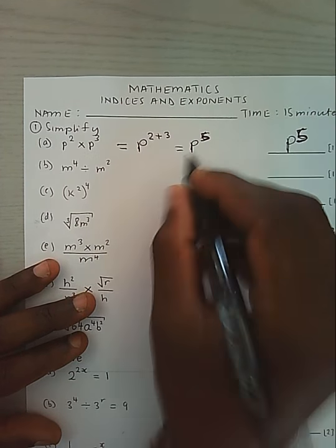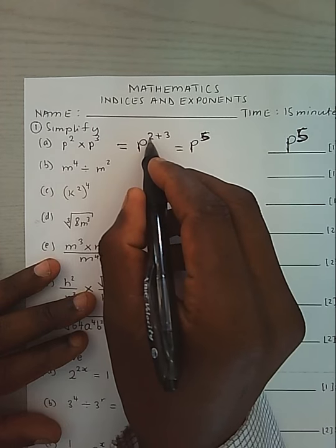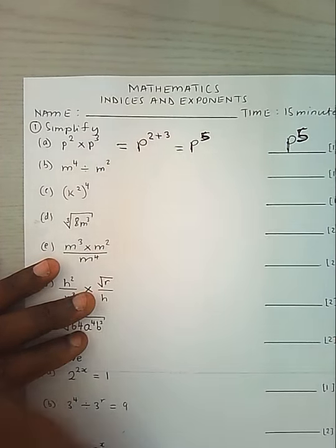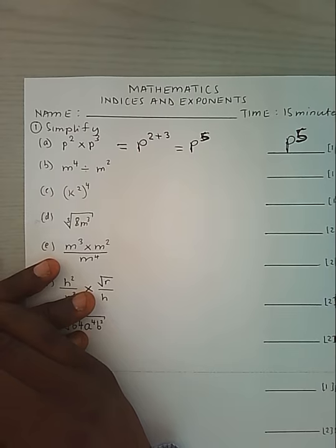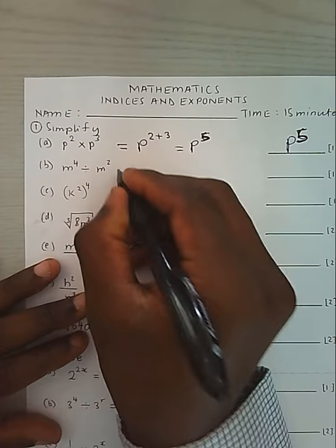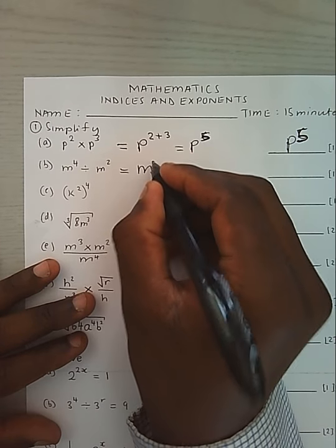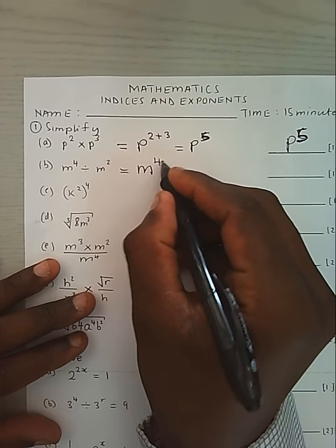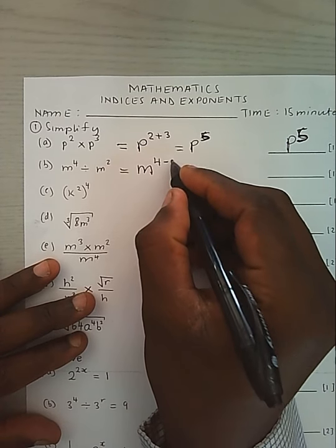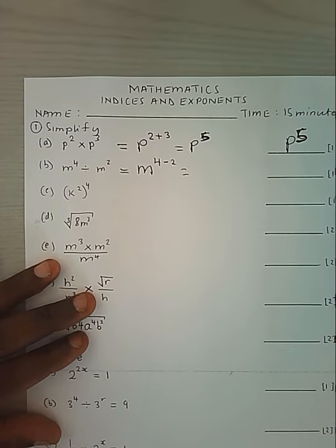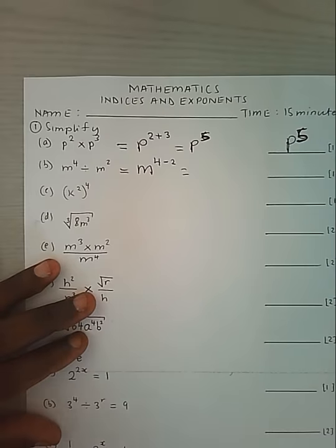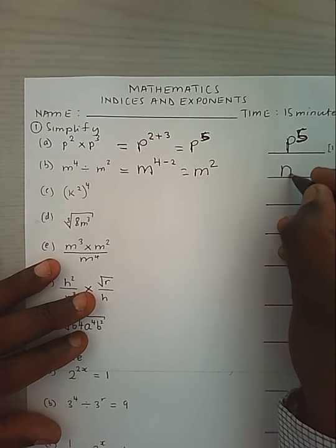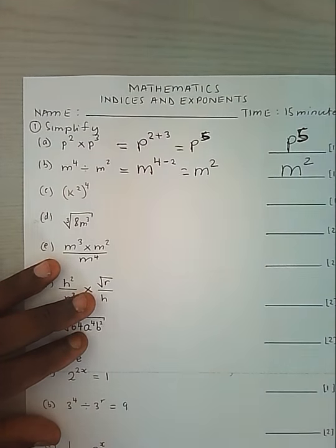Why 5? Because we add 2 plus 3. If we have the same base but dividing, that means we shall subtract the powers, and it will give us n power 2.